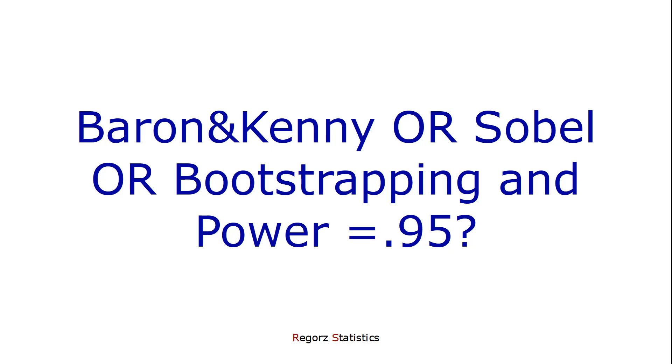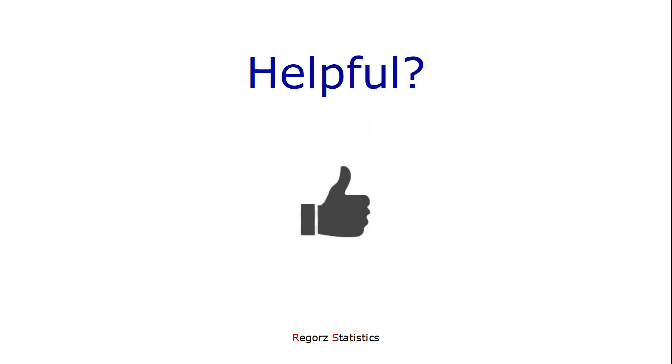But at least for Sobel test or for bootstrapping, I think you could use G*Power and the approach of the joint significance test and then add, let's say, 20% on that number, then you should be fine in most cases. I hope this has been helpful for you. You'll find other statistic tutorials on my web page.